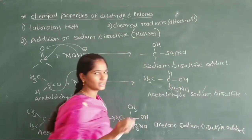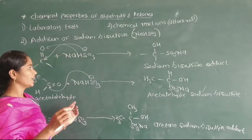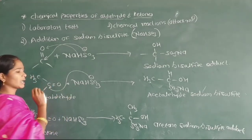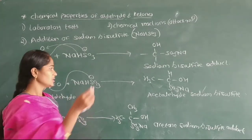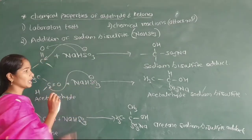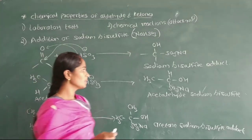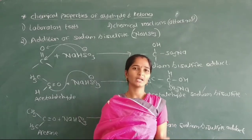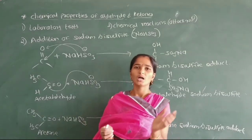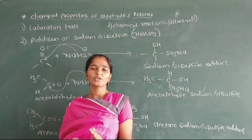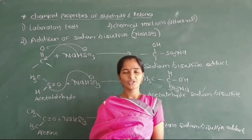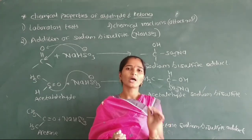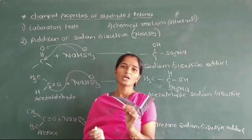That means, in this second reaction of aldehyde and ketone, the negative part of sodium bisulfite adds into the carbonyl carbon — that is, this nucleophile adds into the carbonyl carbon to form a crystalline precipitate of the sodium bisulfite adduct. This is the second chemical reaction of aldehyde and ketone, and it is called a nucleophilic addition reaction to the carbonyl carbon of aldehydes and ketones.